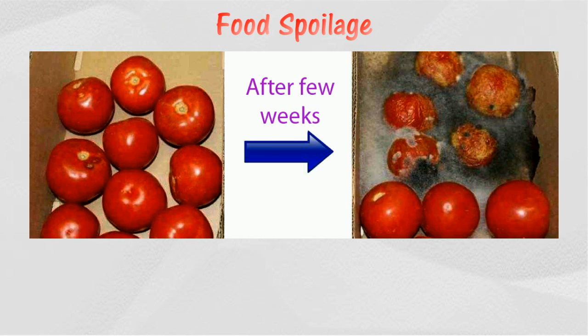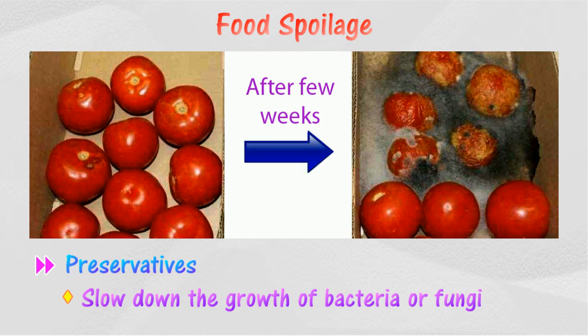Food additives: preservatives. Many foods decompose quickly without preservatives, and this results in wastage of food. Preservatives help in preventing or slowing down the growth of bacteria or fungi so that food can be kept longer. Preservatives are added to food to inhibit the growth of bacteria, molds, and other microorganisms. Here are a few examples of food preservatives commonly used in our daily life.